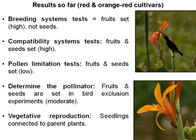What I have found so far is that in the breeding systems experiments, fruit set is high but there are no seeds set. In the compatibility systems experiments, fruit set is high and seed set is also high. For the pollen limitation test, fruits and seed sets are low. When I exclude birds in the bird exclusion experiments, fruits and seed sets are moderate in comparison to the other tests. I also found that these plants can reproduce vegetatively.